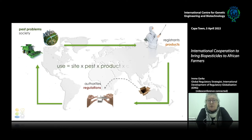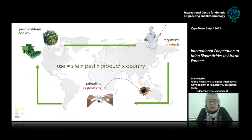All product approvals are given per use. A use is a combination of a site, a pest, a product, and a country. A site can be a cassava field, an apple orchard, or a golf course. For example, in the case of tomatoes, tomatoes in the field and tomatoes in a greenhouse are two different sites.